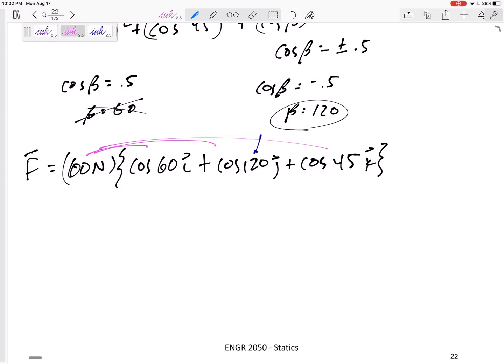So multiply that through and get F would be 30 I minus 30 J plus 42.4 in the K units are newtons.